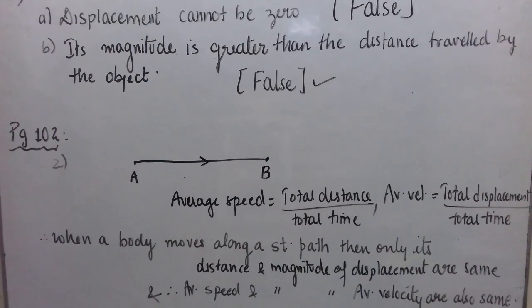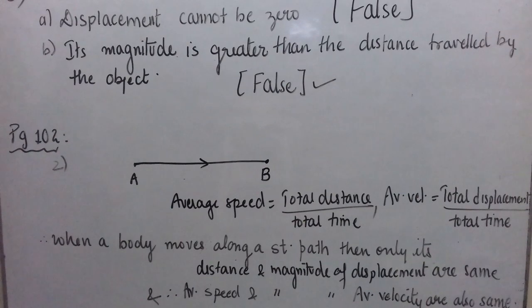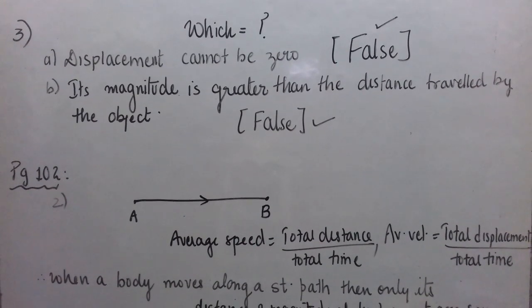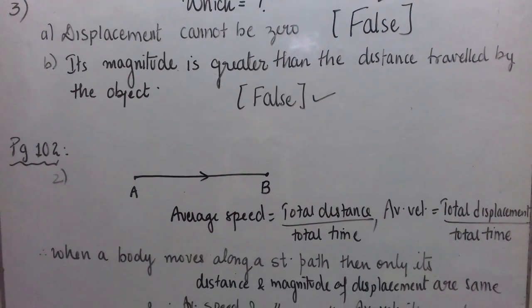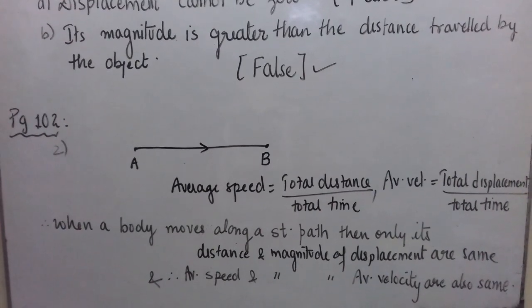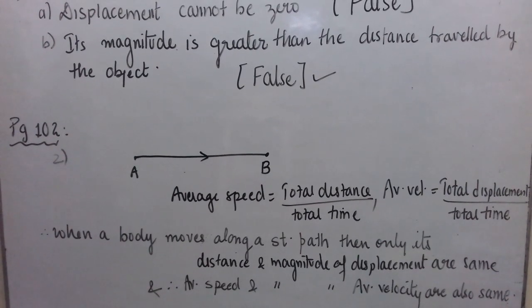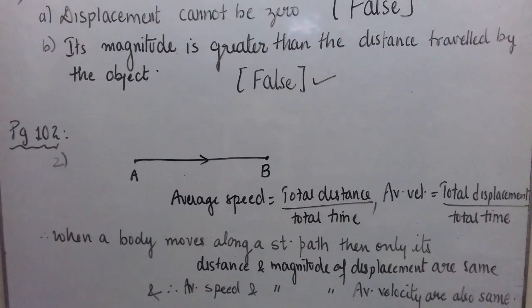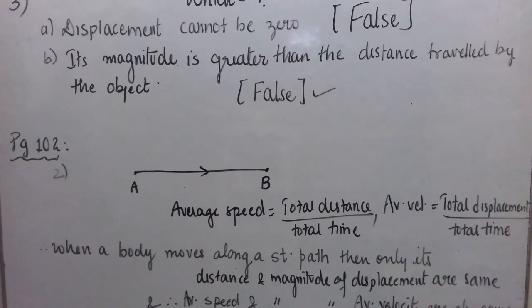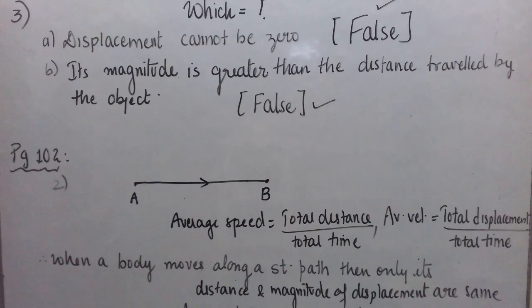Question 3: what does the odometer of an automobile measure? It measures the distance travelled by the vehicle. Question 4: what does the path of an object look like when it is in uniform motion? When a body is in uniform motion, it covers equal distances in equal intervals of time. Direction is not important here, so the path can be straight, curved, or zigzag.